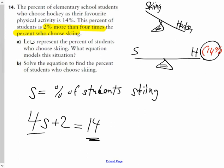Because now the 14% that chose hockey equals four times the number that chose skiing plus 2%. In order to keep it balanced and make everything happy in the universe, I have to add 2% over there. And now I have an equation that I can solve to figure out how many people chose skiing.